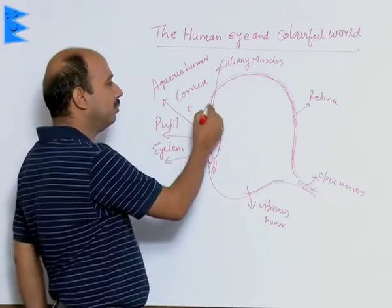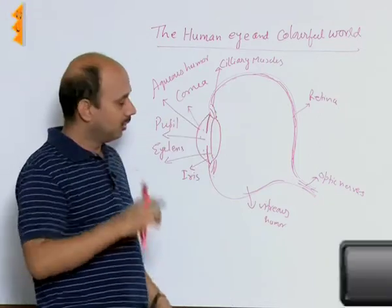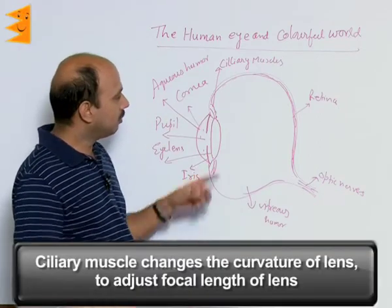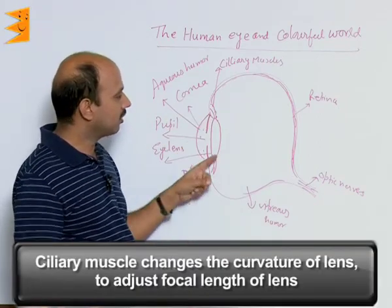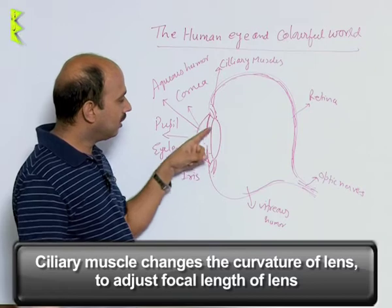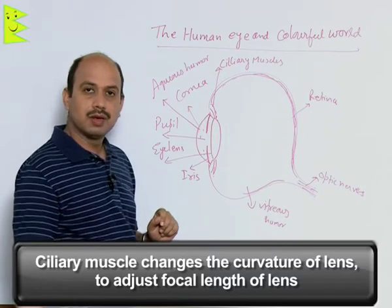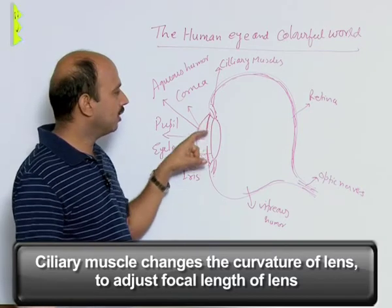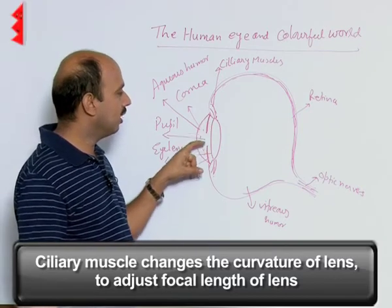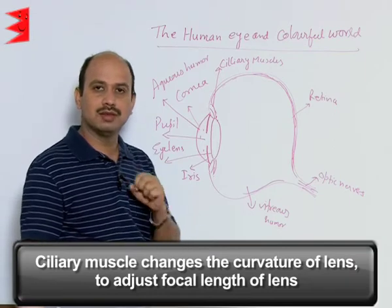Now, the ciliary muscles — the main function of ciliary muscles is to change the curvature of the lens. With the help of ciliary muscles, the lens can adjust its focal length.